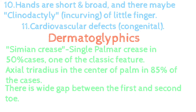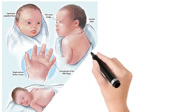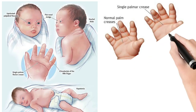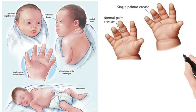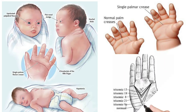Now observe the clinical features discussed earlier: mongoloid slant, flat occiput, flat nasal bridge, clinodactyly, and hypotonia. Observe the normal and simian palmar crease. Have a look at the axial tri-radius — it lies at the center of the palm in Trisomy 21.